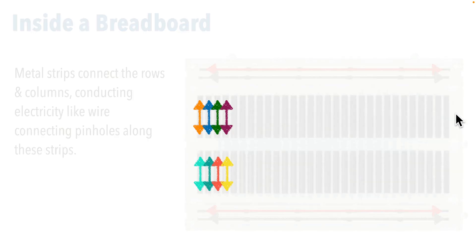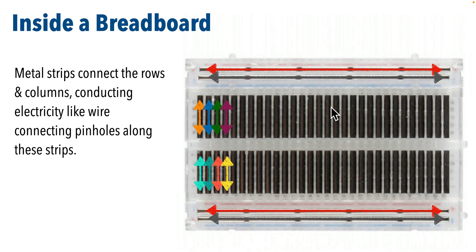The reason the connections work this way is because if you were to open up a breadboard, this is what you'd see inside. These vertical metal bands connect the columns in the center - those are your terminal strips - and the horizontal bands at the top and bottom connect the rails.